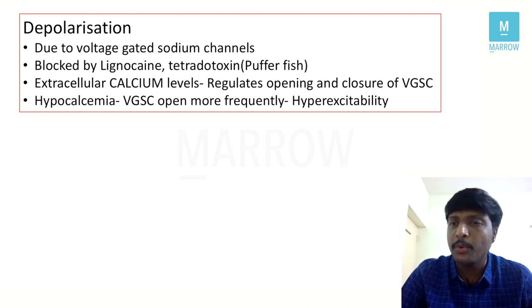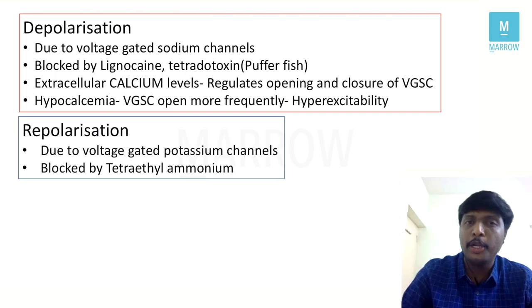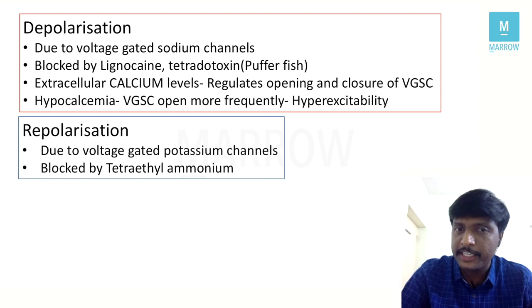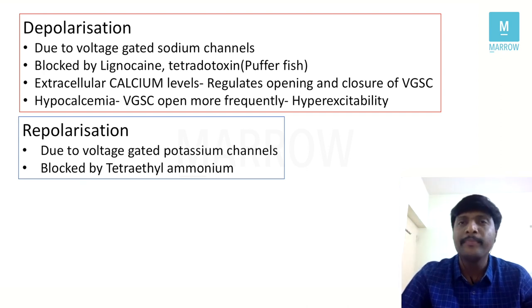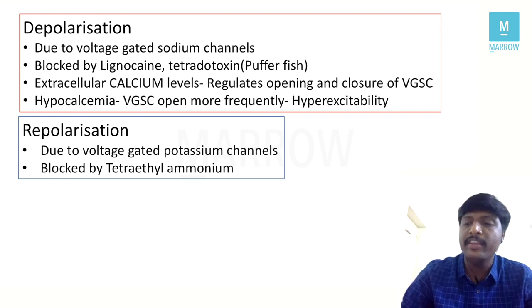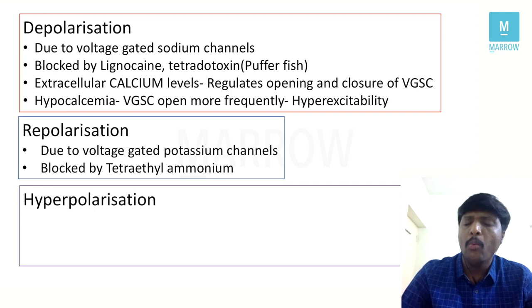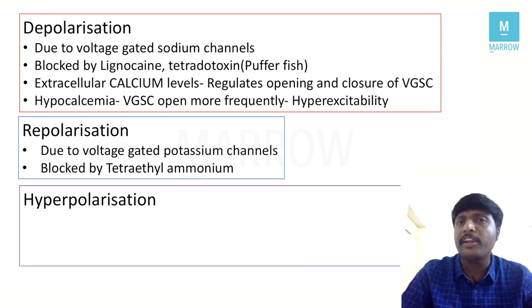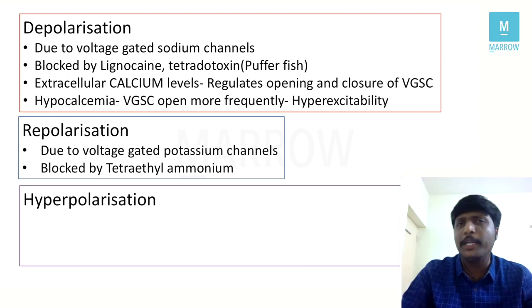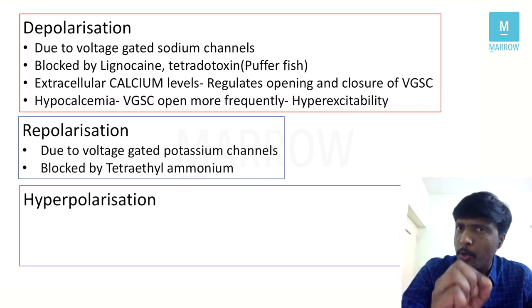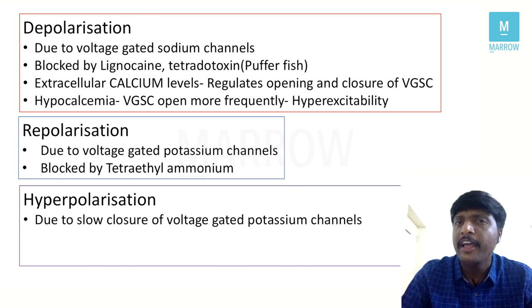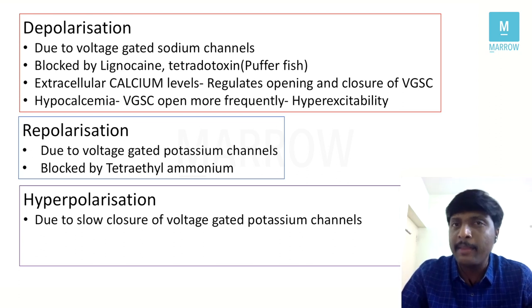From depolarization let's move to repolarization. The channel responsible is the voltage-gated potassium channel. In experimental studies we block these potassium channels with tetraethylammonium. The third phase is hyperpolarization — those potassium channels responsible for repolarization close very slowly. Due to slow closure of voltage-gated potassium channels, the RMP goes even more negative — that is our hyperpolarization.